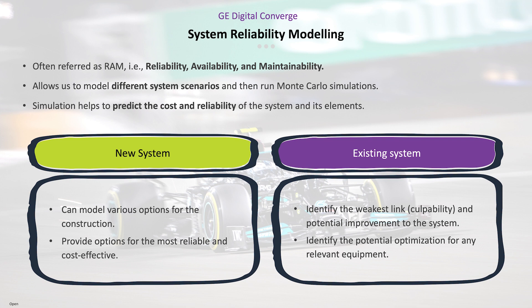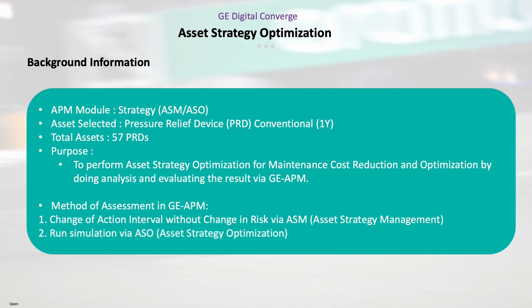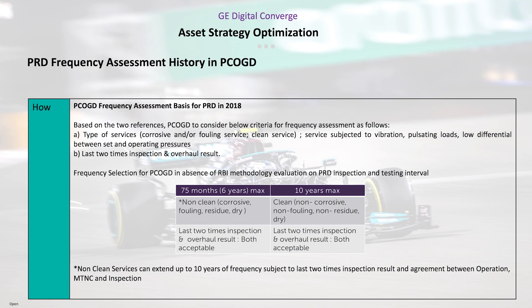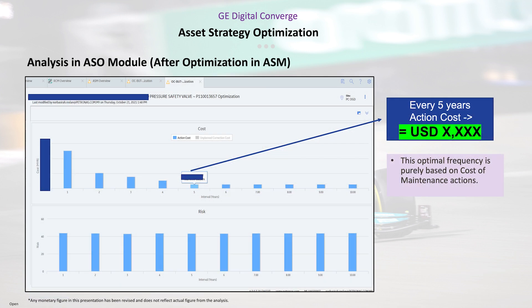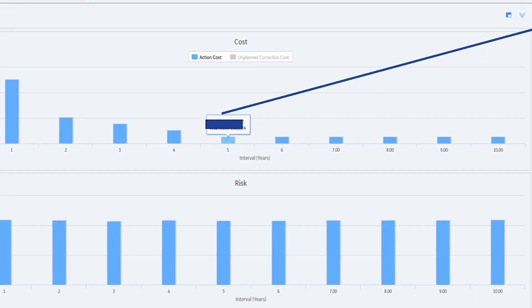From there, we are able to take necessary action to close the gap and meet our target system availability. The purpose is to perform optimization on our PRD using asset strategy optimization. Before GE APM came to our environment at Petronas, we performed the optimization of our equipment manually. For our PRD, we had the RBI program and performed optimization using Excel, referring to RBI. If you can see here, all the bars look about the same, but if we zoom in, there is a little difference in cost and risk.